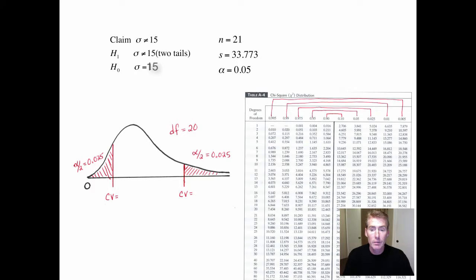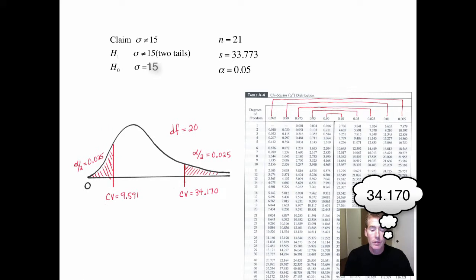And now take a look at table A4. So we need degrees of freedom of 20, which is right here. And then if we're using on the right side point 0.25, that would be this column. So that's a 34.17. And then connected to that is the 9.75, and if you go down here, it's a 9.591. So there are the critical values.